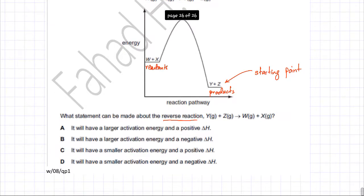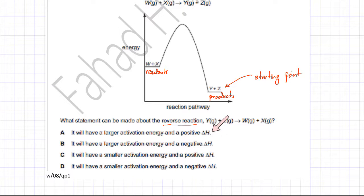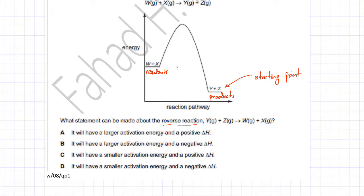We need to figure out which statement is correct. The first statement says it will have a larger activation energy and a positive enthalpy change. Let's talk about the forward reaction first. The activation energy in the forward direction is the energy needed at the start of the reaction.